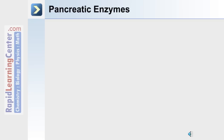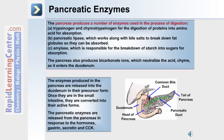The pancreatic enzymes are vital to digestion and absorption. The pancreas produces trypsinogen and chymotrypsinogen for the digestion of protein into amino acids, pancreatic lipase which works with bile salts to break down fat globules for absorption, and amylase to target carbohydrates for absorption. In addition, the pancreas produces bicarbonate ions which neutralize the acid chyme as it enters the duodenum from the stomach.